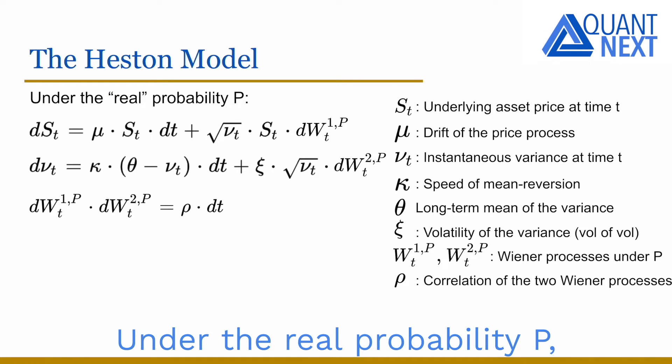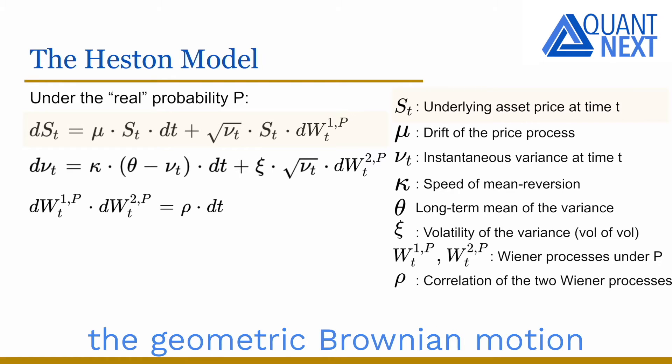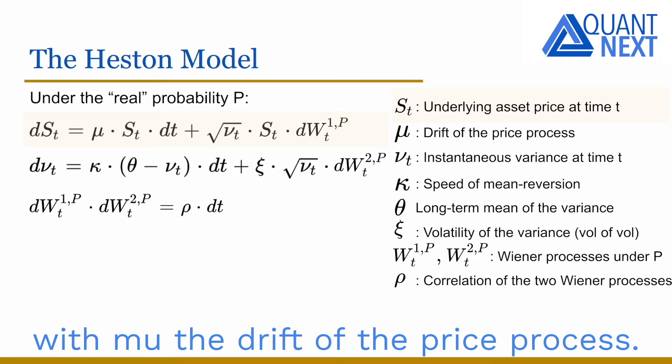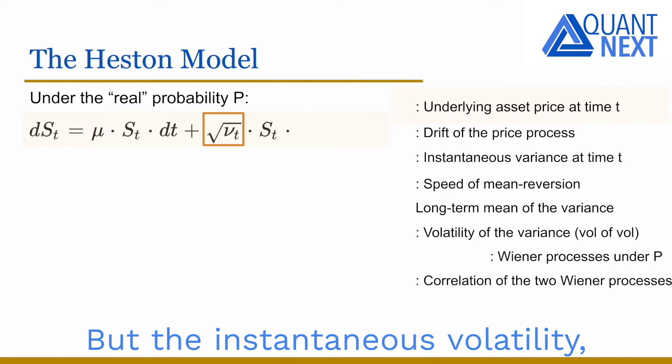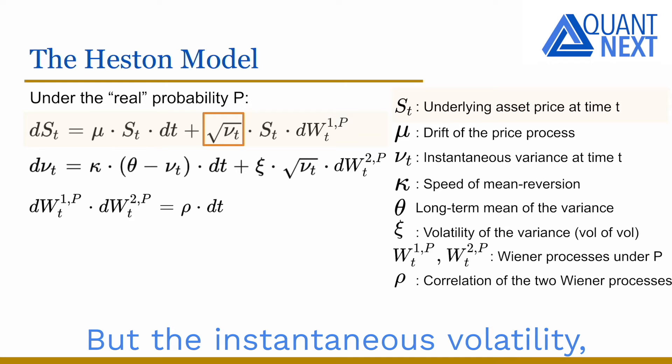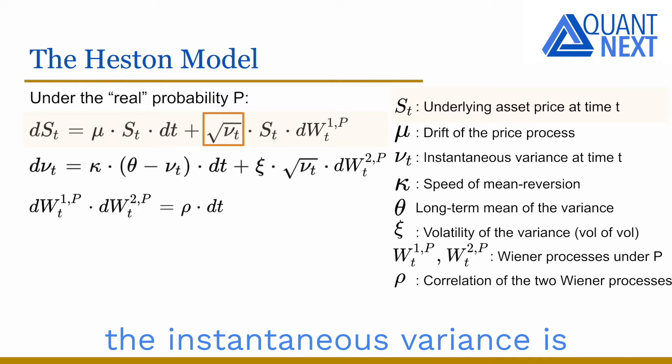Under the real probability P, the asset price follows a process close to the geometric Brownian motion, with mu the drift of the price process, but the instantaneous volatility, the square root of the instantaneous variance, is stochastic as well.